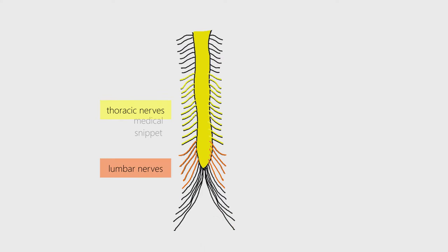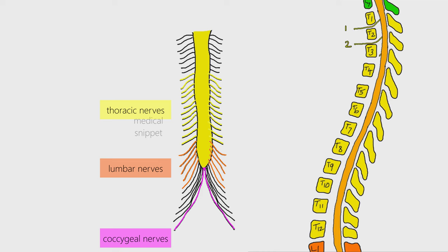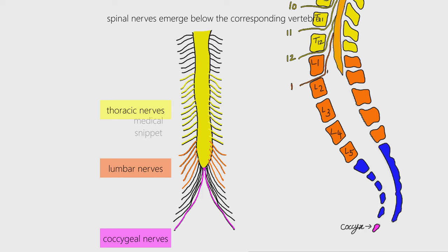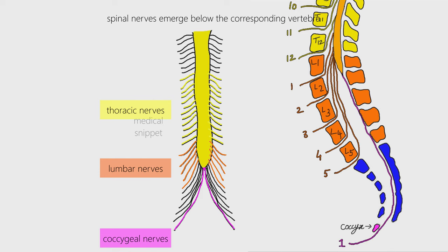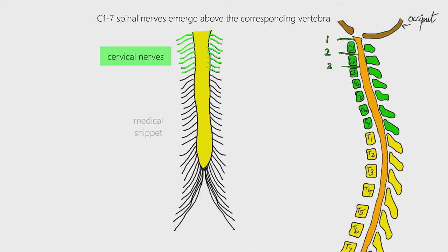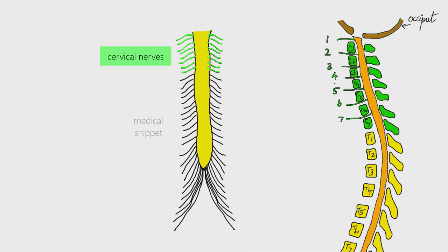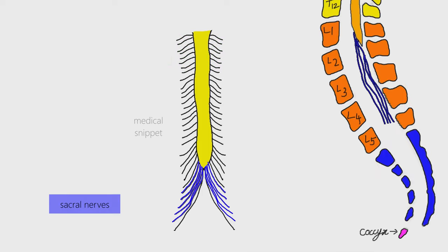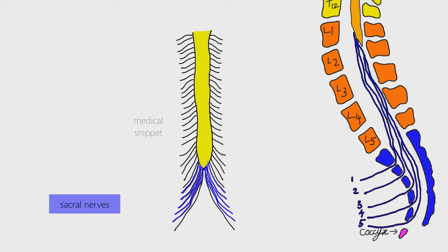The thoracic, lumbar, and coccygeal nerves emerge through the intervertebral foramina below their corresponding vertebra. In the case of cervical nerves, this pattern is different: the 1st to 7th cervical nerves exit the vertebral canal above their corresponding vertebra, while the 8th cervical nerve emerges below the C7 vertebra. That is why there are 8 pairs of cervical nerves though there are only 7 cervical vertebrae. In the case of the sacrum, there are no intervertebral foramina, as the sacral vertebrae are fused, so the sacral spinal nerves emerge via the sacral foramina.